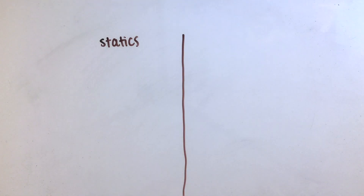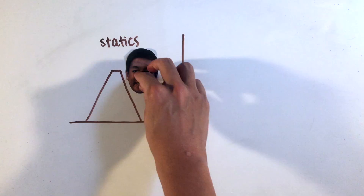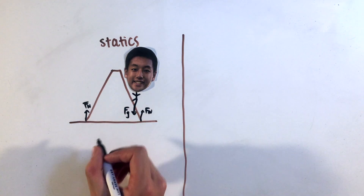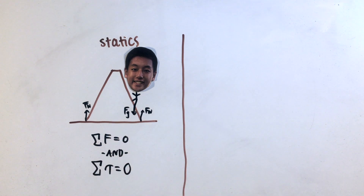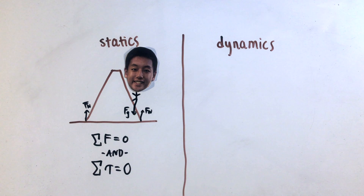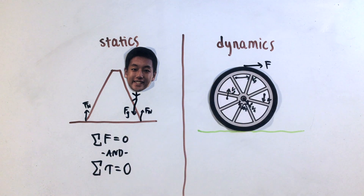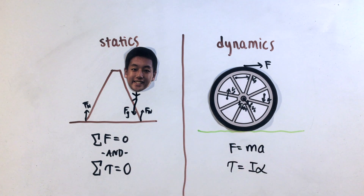As a quick review, torque contributes to the rotation of objects while forces make objects' center of masses move. In static situations, or situations in equilibrium, the net force and net torque on the system both must equal zero. However, in situations where objects accelerate either linearly or rotationally, use Newton's second law and the formula torque equals moment of inertia times angular acceleration to set up your force and torque equations.